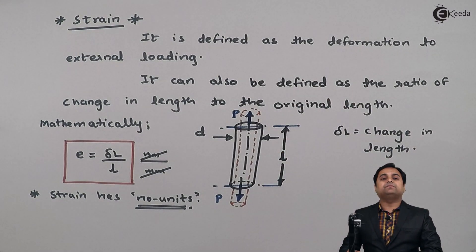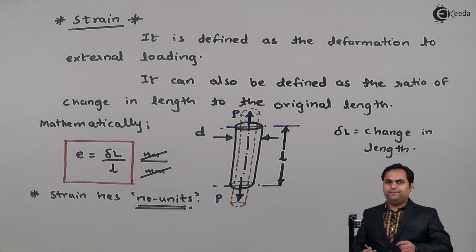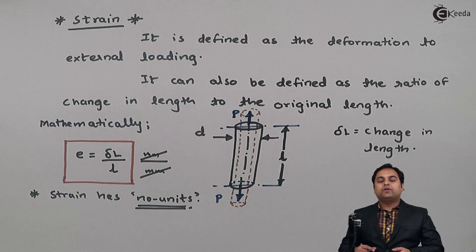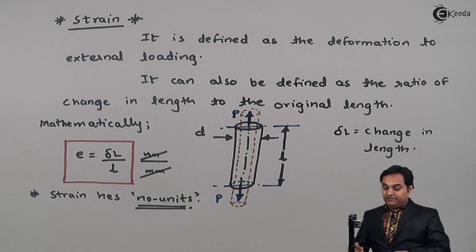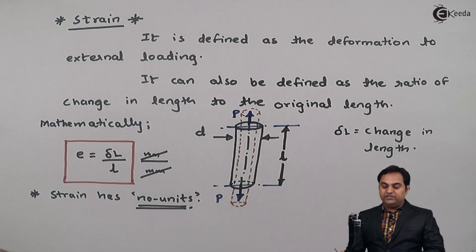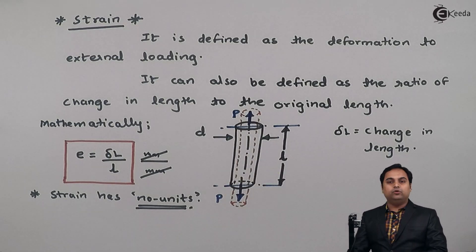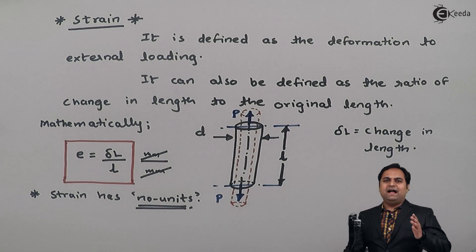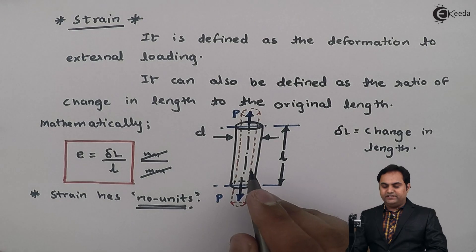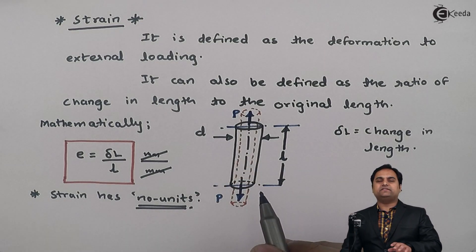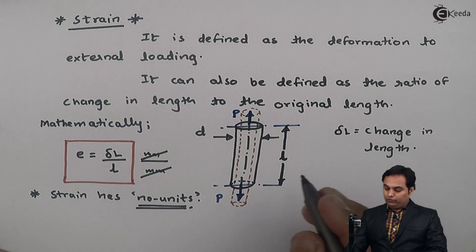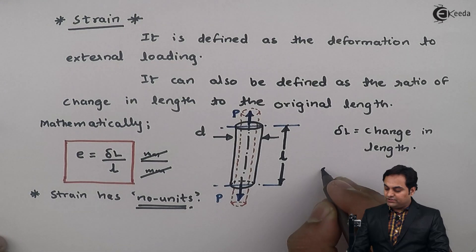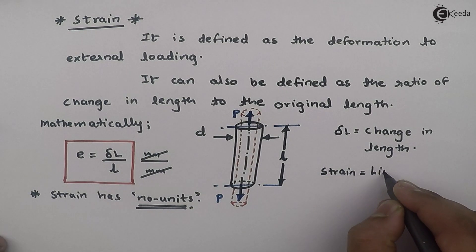Strain is the physical deformation, meaning the deformation which we can see in any member. In the case of pulling, the length increases and diameter decreases. In the case of compression, the direction of the load is changed, so the length decreases and diameter increases - that is also called strain. Stress, on the other hand, is the internal property of a material which resists external loading - stress cannot be seen, but strain is visible as a change of shape. This type of strain is also called linear strain.